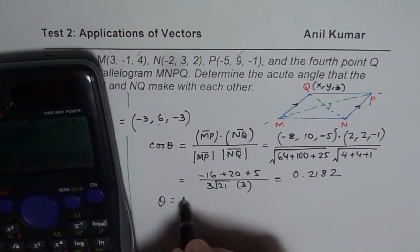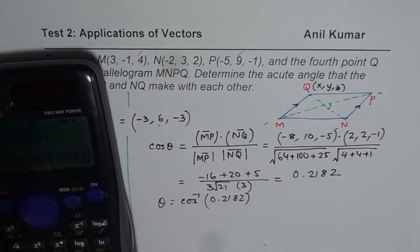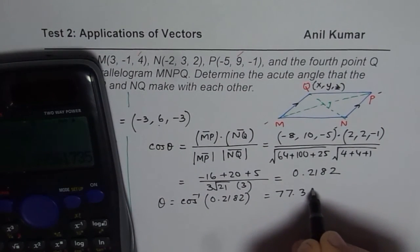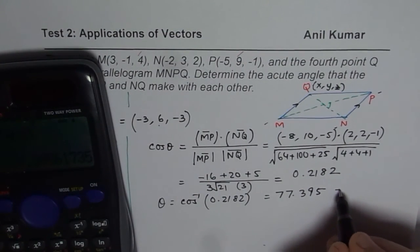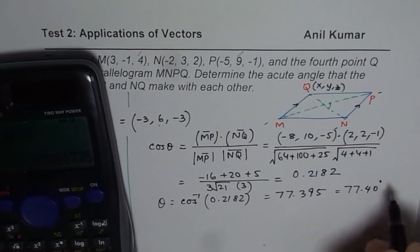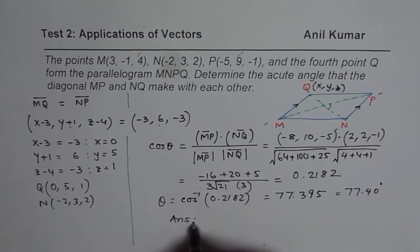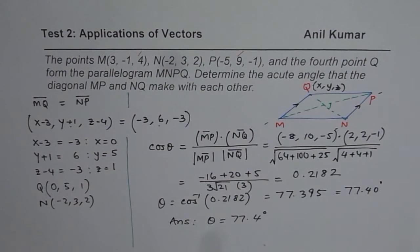So θ equals to cos inverse of 0.2182. So we will use shift cos inverse of the answer, and that gives you the answer as equal to 77.395, which is kind of 77.40. You can write that as 77.40 degrees. So that is the acute angle between the two diagonals. I hope the steps are absolutely clear to you. So we can write down the answer as the acute angle θ is equal to 77.40 degrees. So that is how you can answer this question. I hope that helps. Thank you.